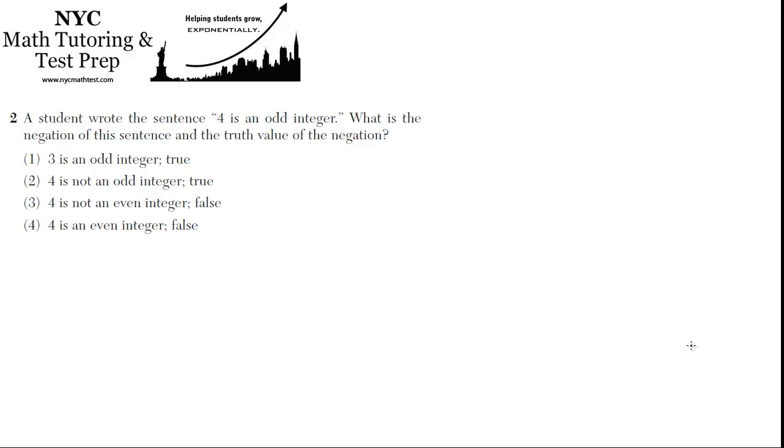A student wrote the sentence, 4 is an odd integer. What is the negation of this sentence and the truth value of the negation?